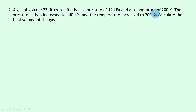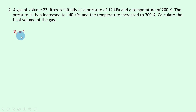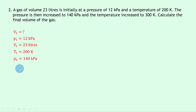Question 2 says that a gas of volume 23 litres is initially at a pressure of 12 kilopascals and a temperature of 200 kelvin. The pressure is then increased to 140 kilopascals and the temperature increased to 300 kelvin. Calculate the final volume of the gas. The temperatures are already in Kelvin, so no conversion is needed. We're trying to find v2; p1 = 12 kPa, v1 = 23 litres, t1 = 200 K, p2 = 140 kPa, and t2 = 300 K.